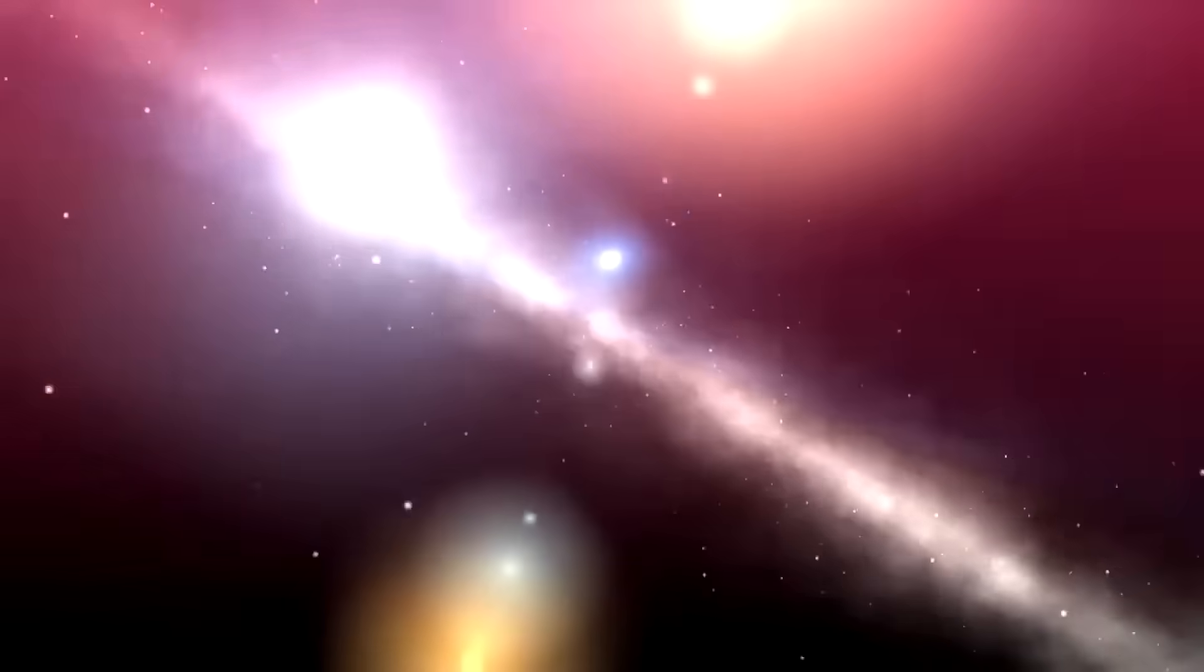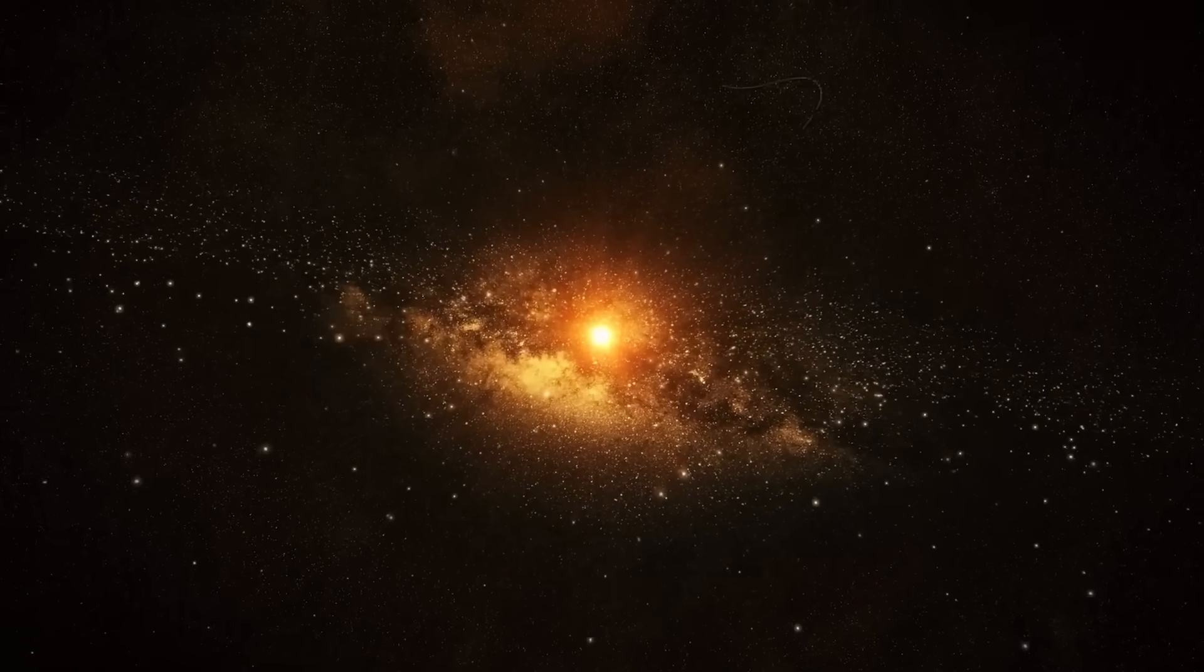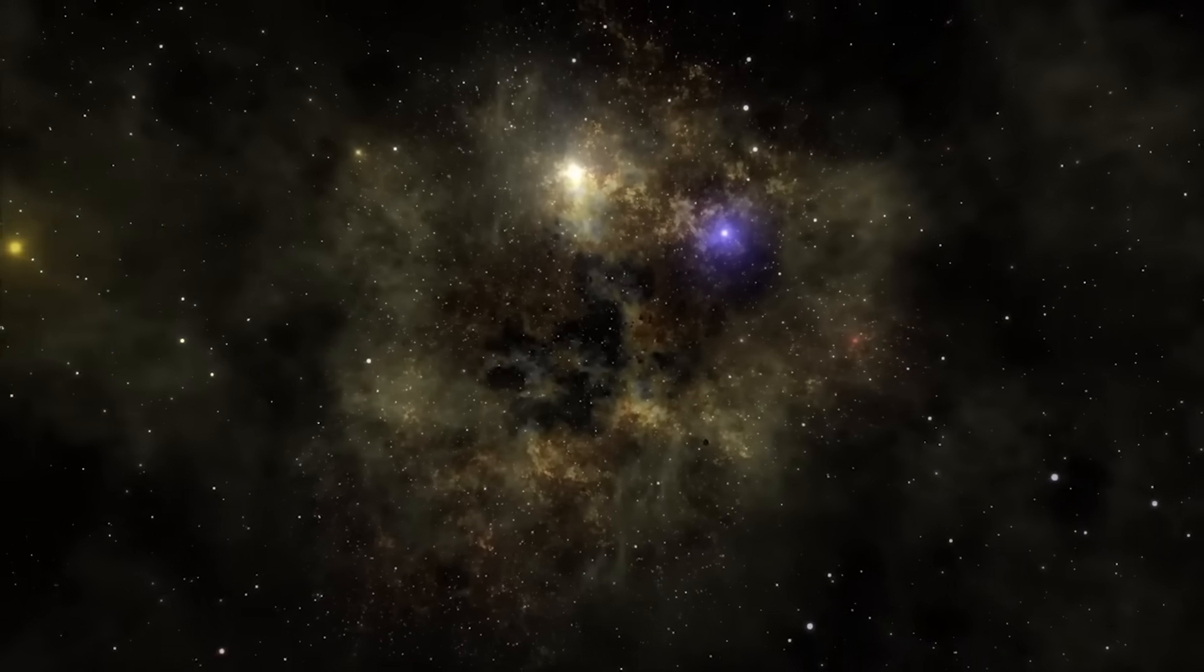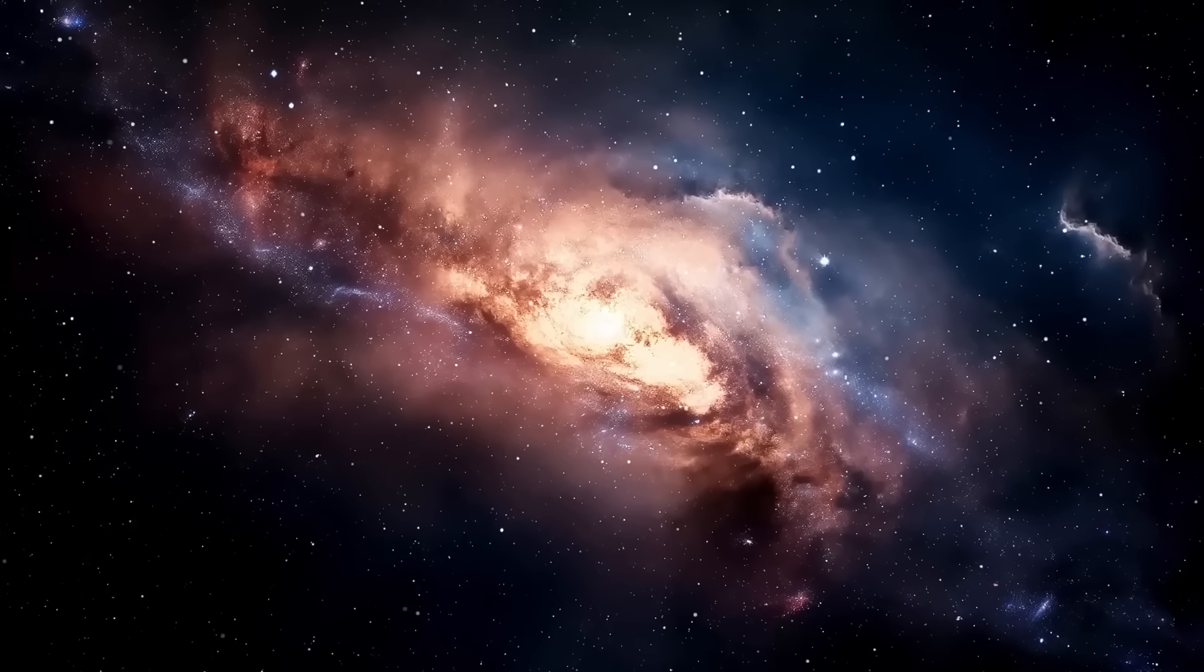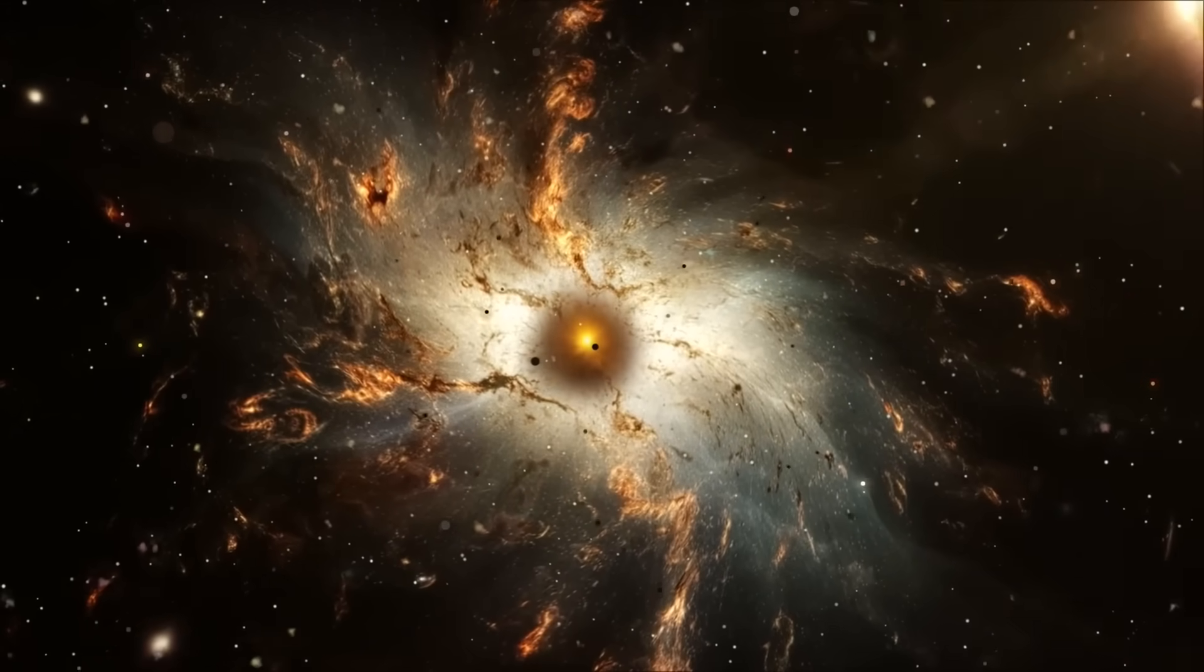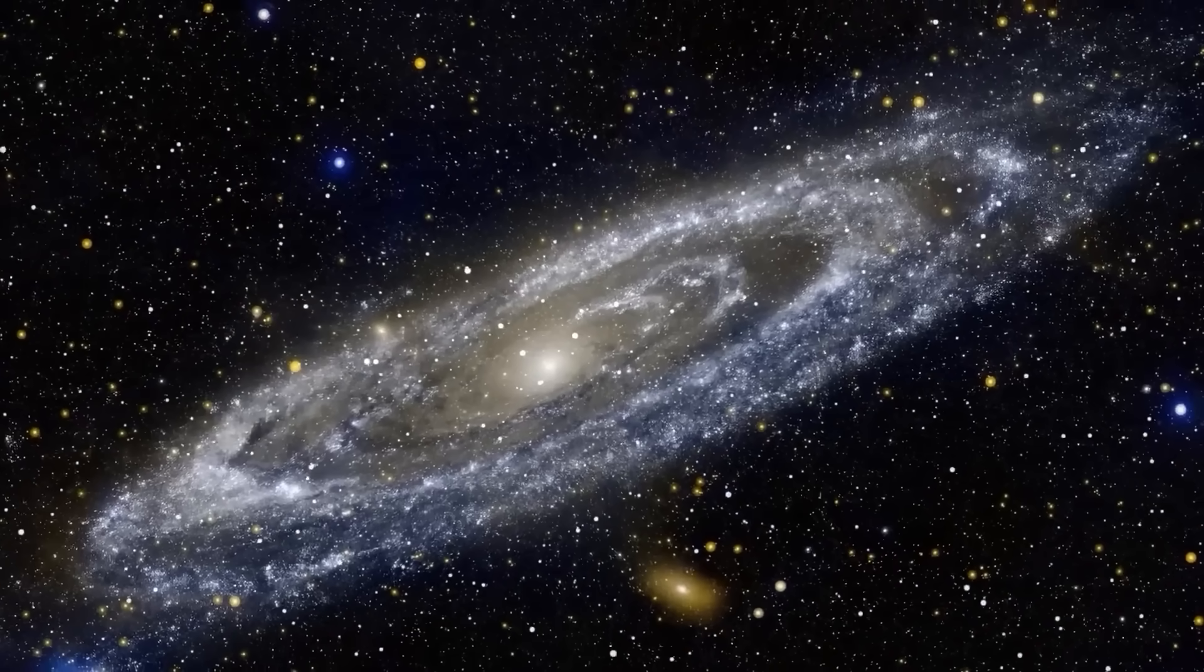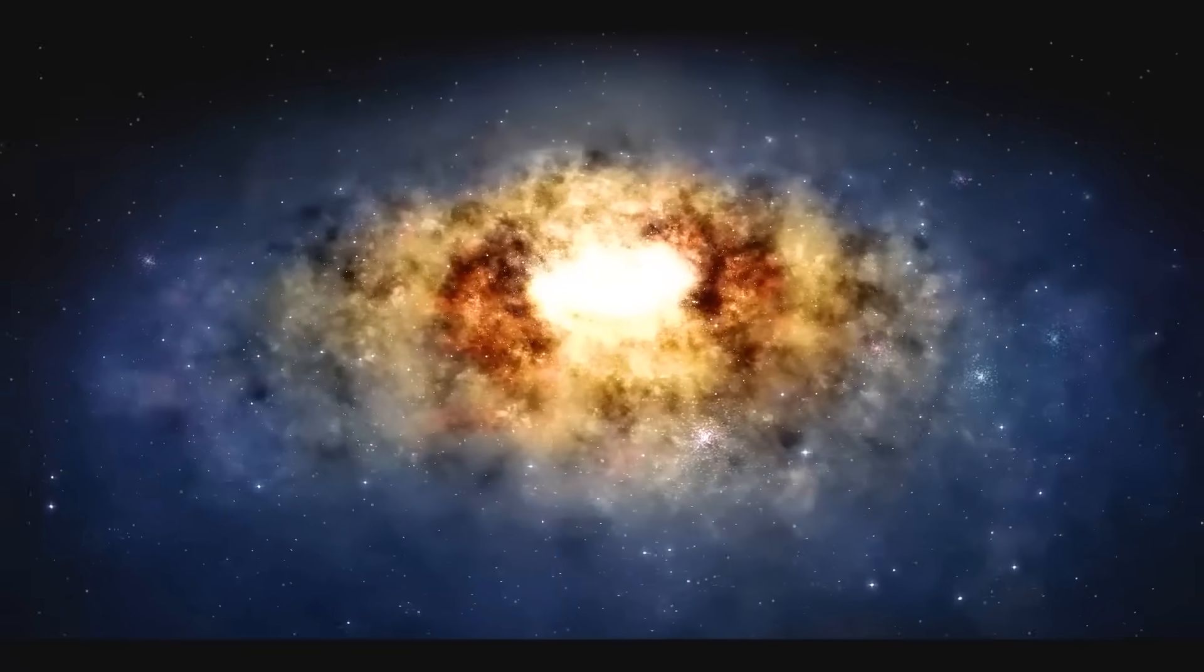It all started with a single object, a small yellow blob hidden in one of Webb's deep field images, barely noticeable among thousands of faint specks. There was no reason to think it was anything special, nothing about it that screamed cosmic anomaly, except for one detail that refused to be ignored. It was too bright. Not just slightly unusual bright, it was bright in a way that violated every luminosity model we have for the early universe.